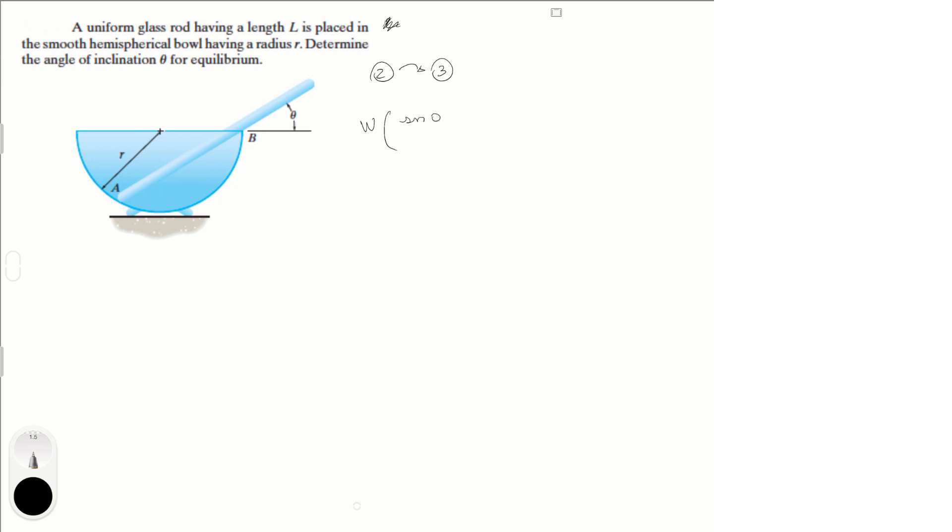you know that the weight times the sine of theta over the cosine of theta times the sine of theta plus F of B minus the weight times the cosine of theta is equal to 0. Let's call this equation 4.